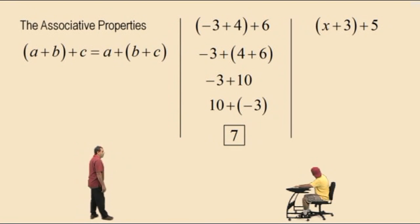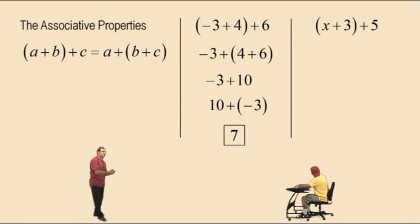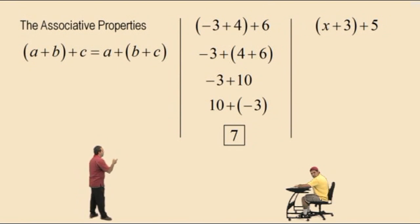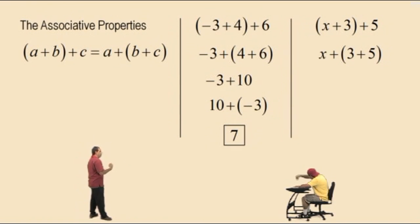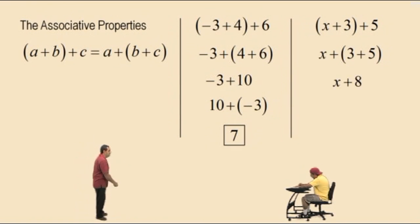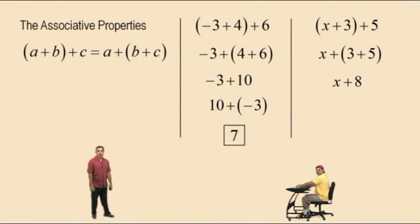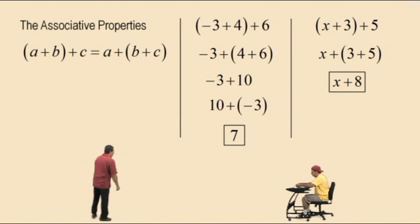Here we have x plus 3 plus 5. We cannot add x plus 3 — they are not like terms. That's not 3x; 3x means 3 times x. We'll talk about that in the next lecture on Combining Like Terms. But we can move the parentheses around the 3 plus 5: bring down our x, 3 plus 5 is 8, and we have x plus 8. Remember, you cannot add x plus 8 — they are not like terms.